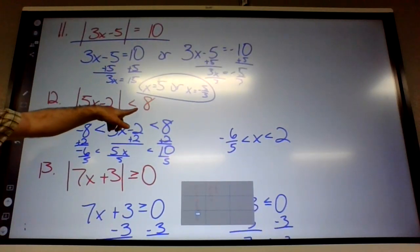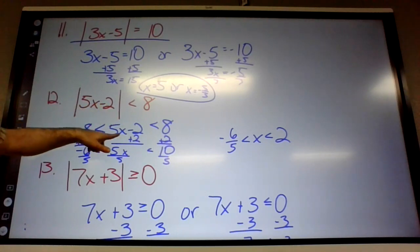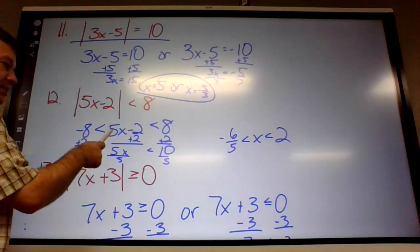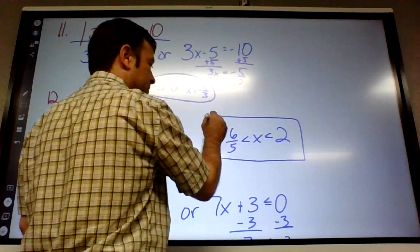Absolute value less than, this was like number 4, I think it was. You have to set 5X minus 2 between 8 and negative 8 and get X by itself in the middle.